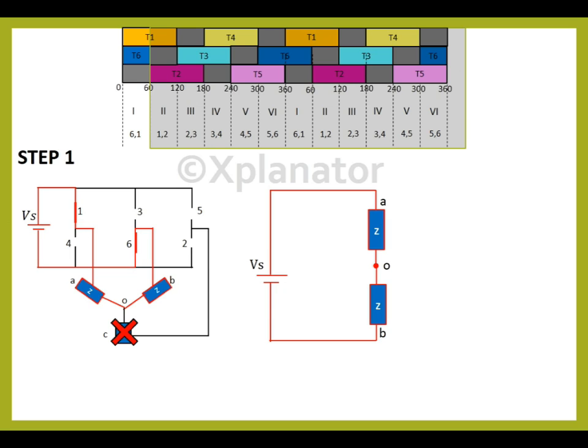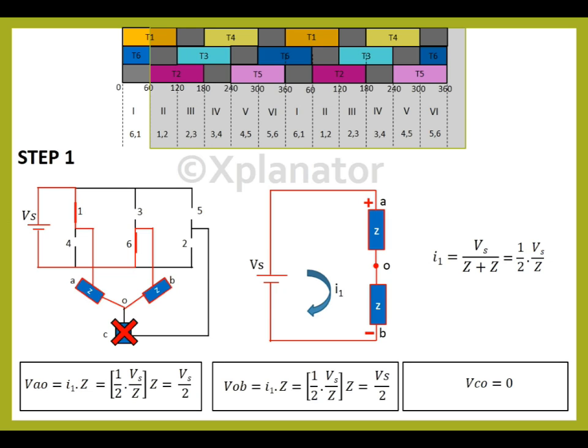Each load has an impedance Z and as AO and OB are in series, the total impedance is Z plus Z. If a current I1 flows in the closed circuit, it will drop a potential as per the polarity shown. The value of the current is given by total voltage divided by total impedance, which is Vs divided by 2z. The voltage drop across each impedance will be total current multiplied by total impedance. The voltages developed will be VAO, VBO and VCO. Note that we consider OB and not BO as O is neutral, therefore more positive compared to B which is connected to the negative terminal of the supply in step 1.